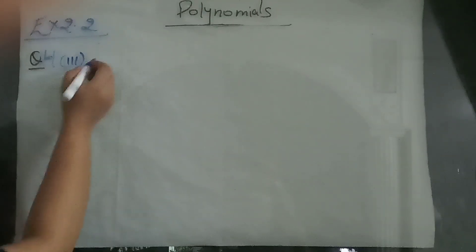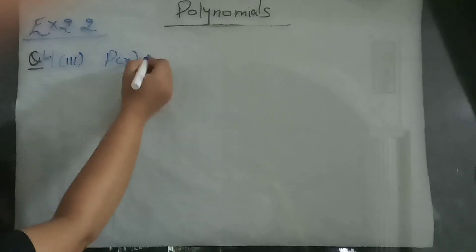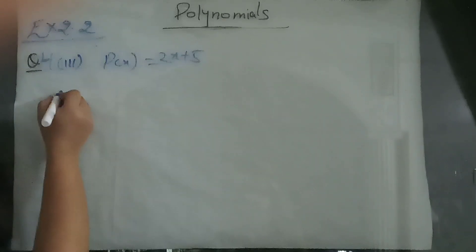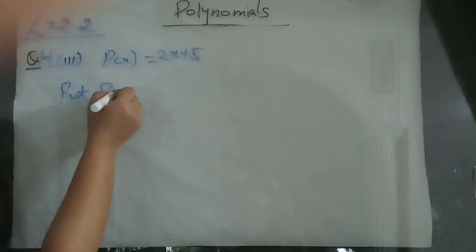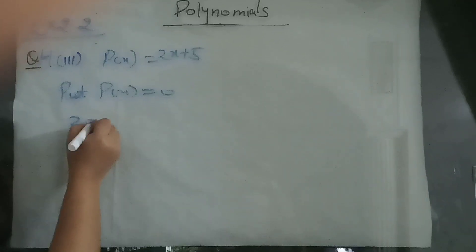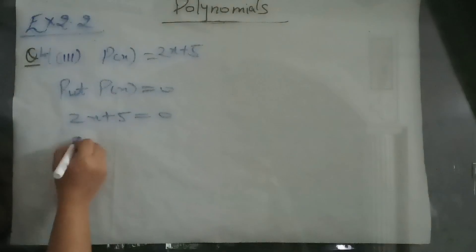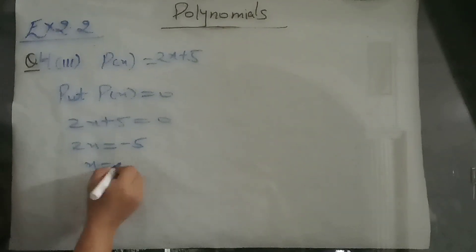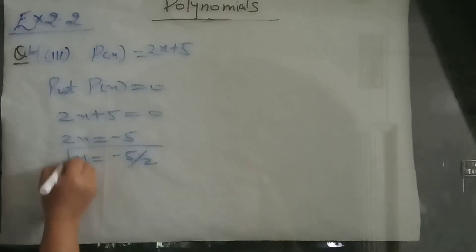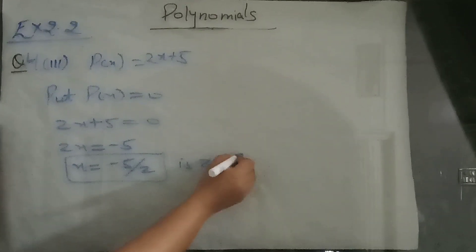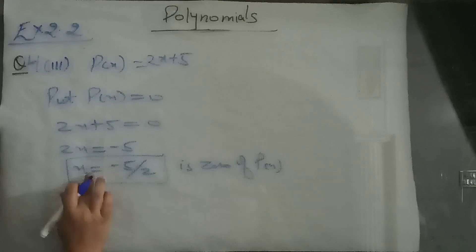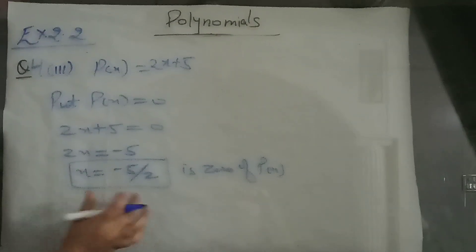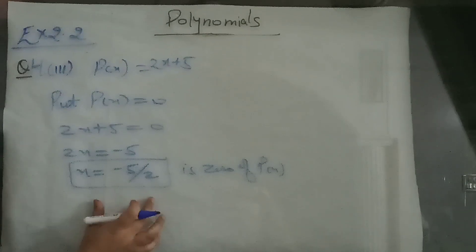Third part is p of x equal to 2x plus 5. Put p(x) equal to 0: 2x plus 5 equal to 0, so 2x equals minus 5, giving x equal to minus 5 by 2. This is the zero of the polynomial. You can verify by putting x equal to minus 5 by 2 in the polynomial — your answer should be 0.